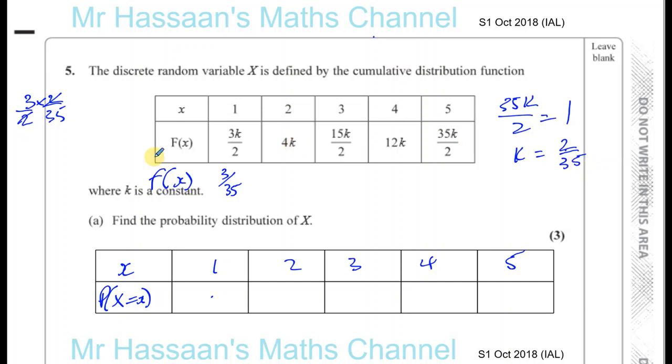Then you've got 4 times k, so it's 4 times 2 over 35, which is 8 over 35. Then you've got 15 over 2 times k, which is 15 over 2 times 2 over 35, the 2's cancel, leaving you with 15 over 35. I'm not going to simplify this because I want to be able to add these together and make it easy for me. Then I've got 12 times 2 over 35, which is 24 over 35. And then this is going to equal 1.